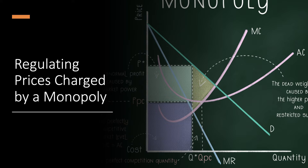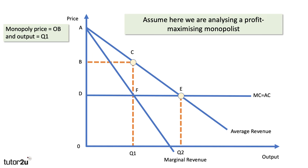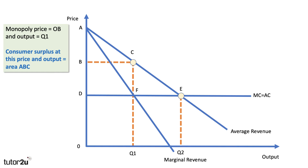Let's move on to a couple of applications from year 13 micro. Our focus is going to be on price regulation for a monopoly. We're going to assume we are dealing with a profit-maximising monopolist, with a constant cost business where the marginal and the average cost of supply is the same — just a simplifying assumption that makes diagrams much easier to draw in the A-level exam. The original profit-maximising output is Q1, the price is OB, and therefore consumer surplus at this price and output is area ABC. The area BCFD, of course, will be monopoly supernormal profit.